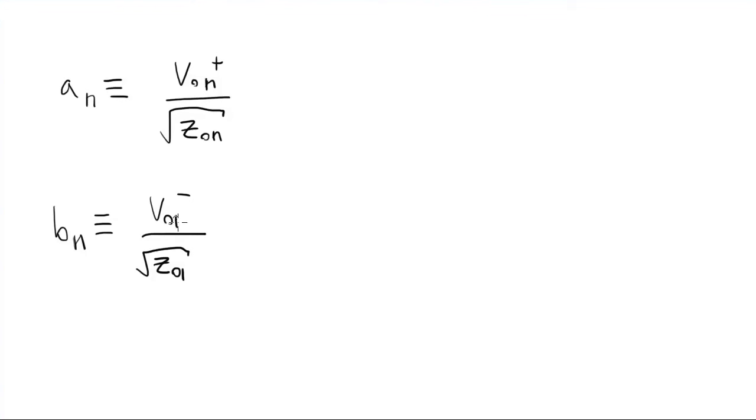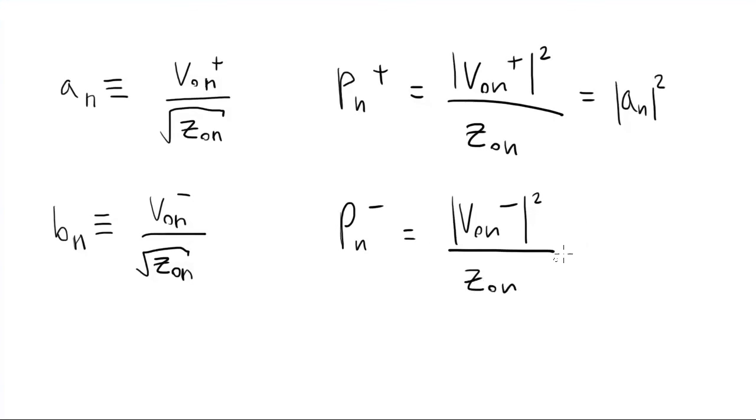So in general, we have N ports. And this applies to all of them. The incident power is P sub N plus. And the outgoing power is P sub N minus. These are in units of volts squared over ohms.